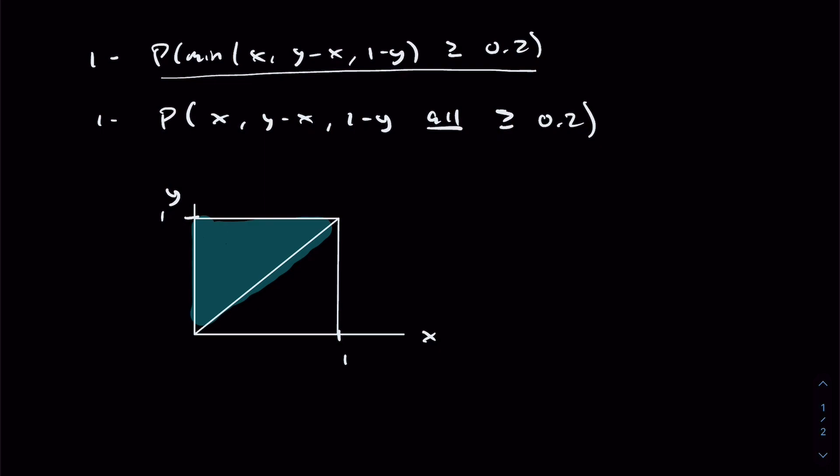We can now further partition our outcome space based off of the three conditions, which is that x, y minus x, and 1 minus y are all greater than or equal to 0.2. We'll start with the first. So x being greater than or equal to 0.2. We can write 0.2 along the x-axis, draw a vertical line, and because x is greater than or equal to the value defined at this boundary, we know that x must be to the right of this line.